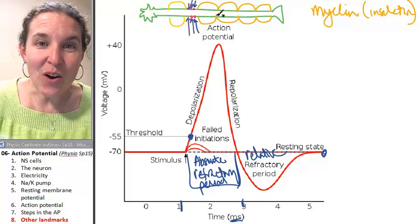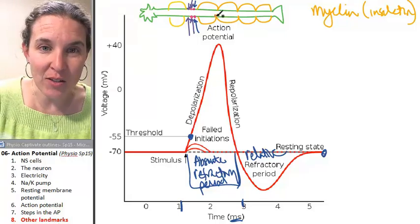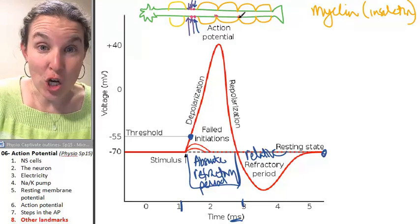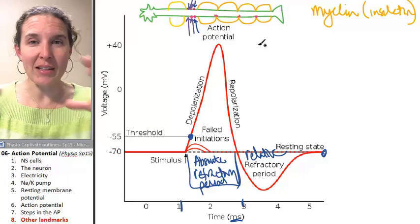So there are only sodium and potassium channels. I'm just going to draw the little sodium ones in here. In these little nodes where the myelin sheaths connect.